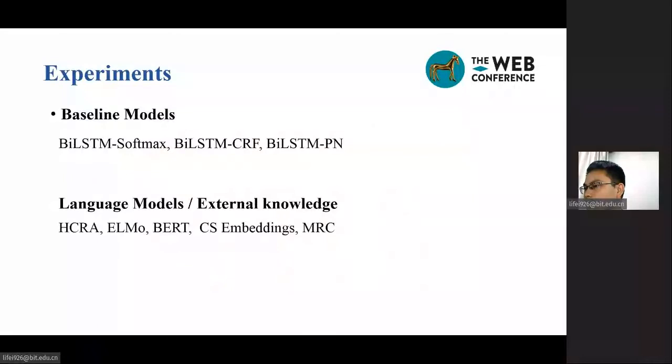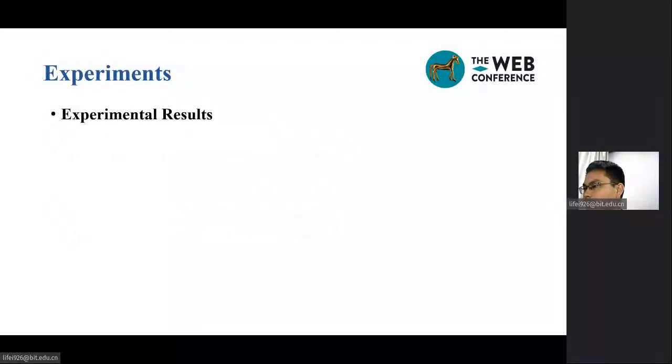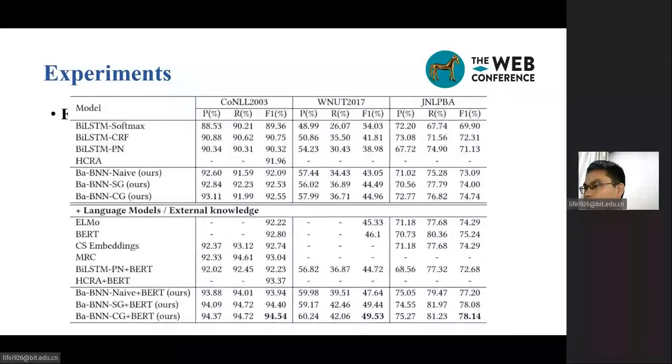We evaluate the proposed Ba-BNN model against the following baseline models. From the table, when comparing with models without using any language models or external knowledge, we observe that our model outperforms all the compared models in terms of precision, recall, and F1 scores, and achieves 0.59, 3.15, and 2.43% improvements on F1 scores for the CoNLL2003, WNUT2017, and JNLPBA datasets, respectively.